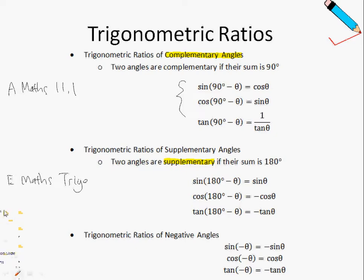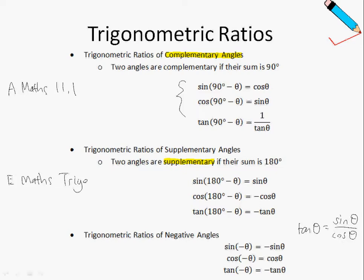Something new to most of you today is the trigonometric ratios of negative angles — these are not too difficult to understand, so I'll just briefly mention it. Sine of negative theta is just negative sine theta; the cosine of negative theta is just cosine theta; and the tangent of negative theta is just negative tangent theta. Also, tangent can be defined as sine theta over cosine theta.